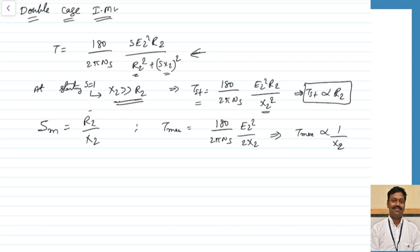The slip corresponding to maximum torque will depend on the ratio of R2 to X2. More the value of the resistance, the slip corresponding to maximum torque will increase, and lesser the value, the slip corresponding to maximum torque will decrease. The maximum torque is inversely proportional to the reactance.